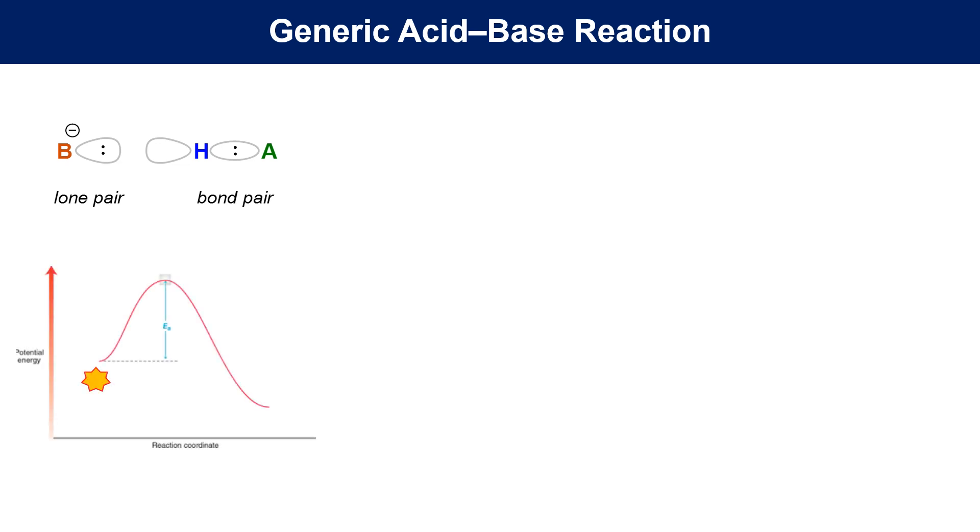Here the base and the acid are the starting materials that begin as stable compounds before they are mixed together. The base then donates its lone pair into the anti-bond of the HA bond, temporarily destabilizing the system as the materials transition towards products.